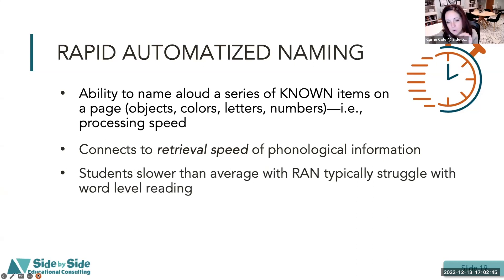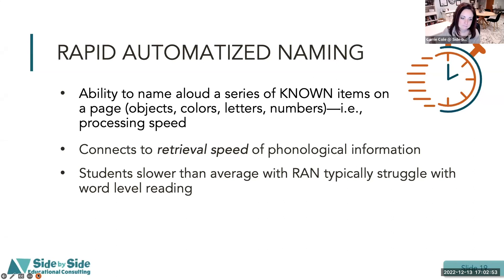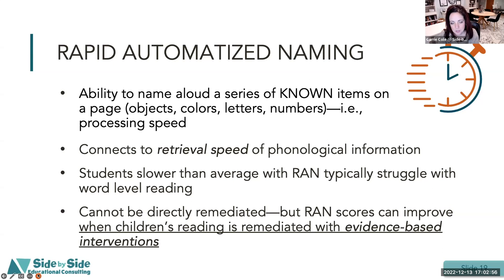Students who are slower than average with RAN typically struggle with word-level reading. And you need to know this cannot be directly remediated. You can't take a student whose RAN scores are below the 50th percentile and run a RAN intervention — there's no intervention specifically for RAN.